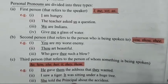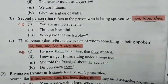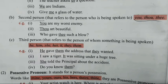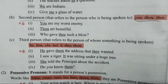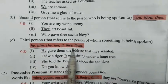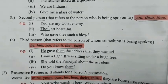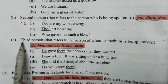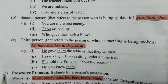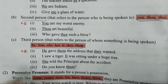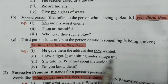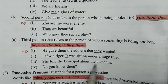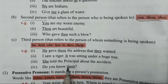The third person refers to a person about whom something is being spoken — third party ke baare mein hum log baat kar rahe hai. Examples: 'He gave them the address that they wanted.' 'I saw a tiger. It was sitting under a huge tree.' So 'it' ho jaata hai third person. 'She told the principal about the accident.' 'Do you know them?' — so 'them' is also third person.